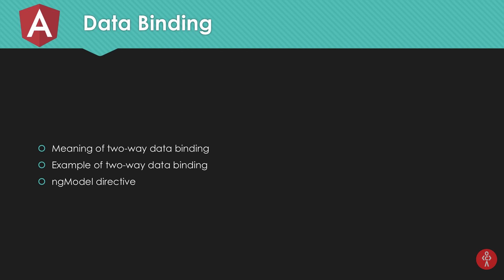Let's first start with what two-way data binding actually means. In the last tutorial, we discussed how we can take some interactions from the view side to our JavaScript side, and from our JavaScript side back to our view side. For example, sometimes you want to know when the user clicked a certain button — in that case you want some data from the view side into your JavaScript, into your controller.